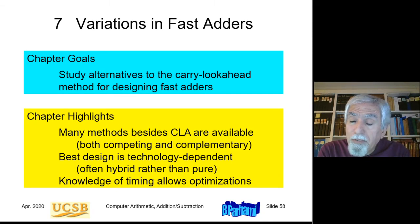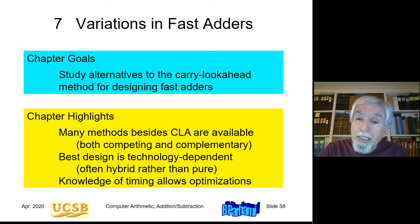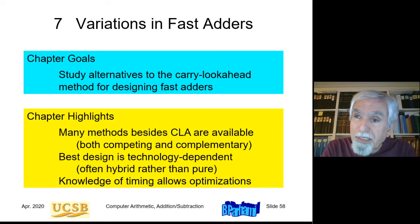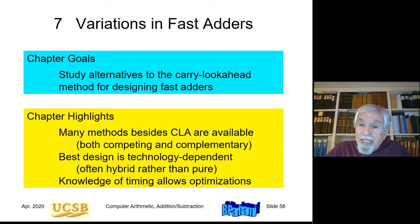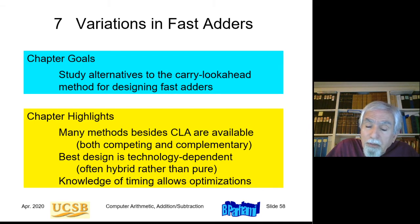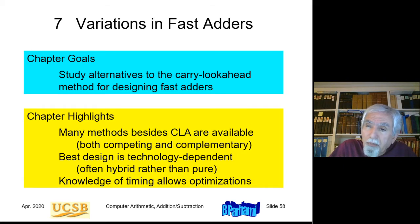Welcome to Lecture 5 for the course ECE 252B, Spring 2020. This lecture is recorded on April 9th and is scheduled for Monday April 13th, 2020. It deals with Chapter 7 of the textbook: Variations in Fast Adders. We want to study alternatives to the Carry Lookahead method for designing fast adders. We studied Basics of Addition in Chapter 5 and Carry Lookahead Addition in Chapter 6. This chapter presents alternatives and ties everything together with respect to adders, covering all miscellaneous topics not yet covered.